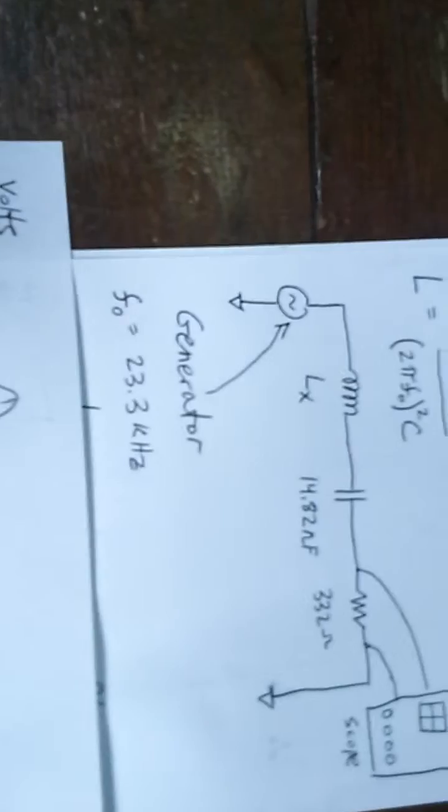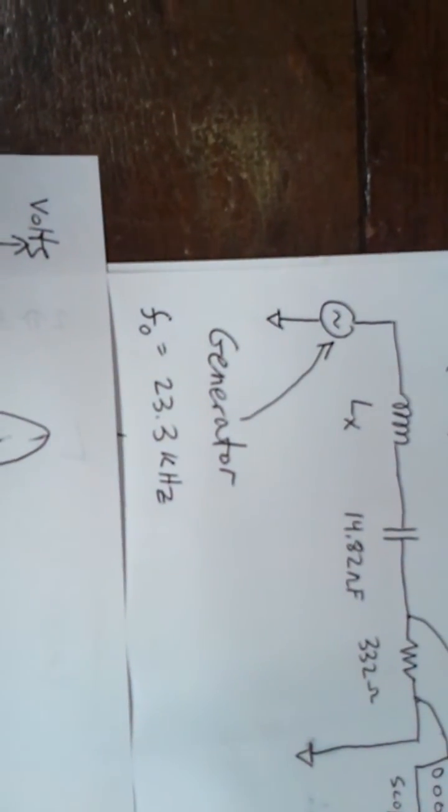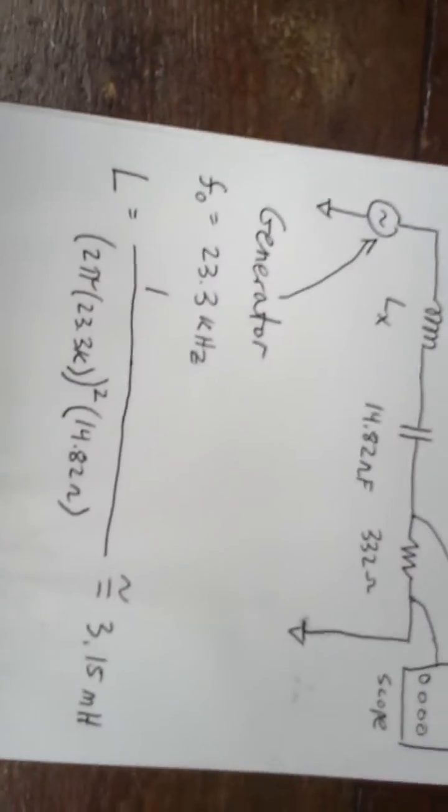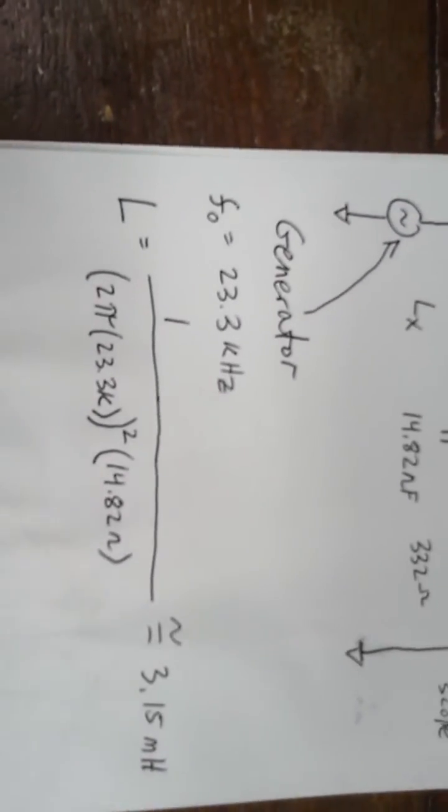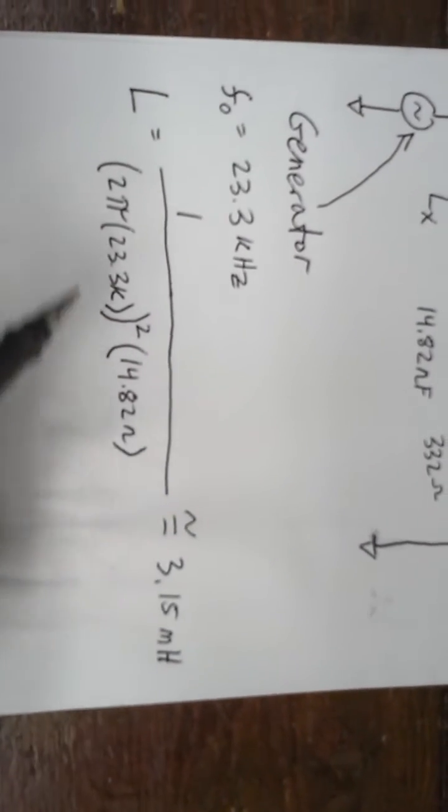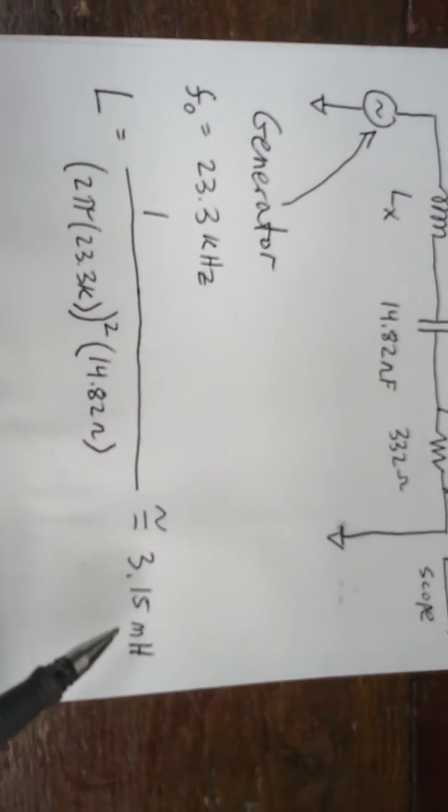When I did the experiment before, I found that the frequency where the maximum response occurs is 23.3 kilohertz. And when you plug in 23.3 kilohertz into the equation, the inductance you arrive at is 3.15 millihenries.